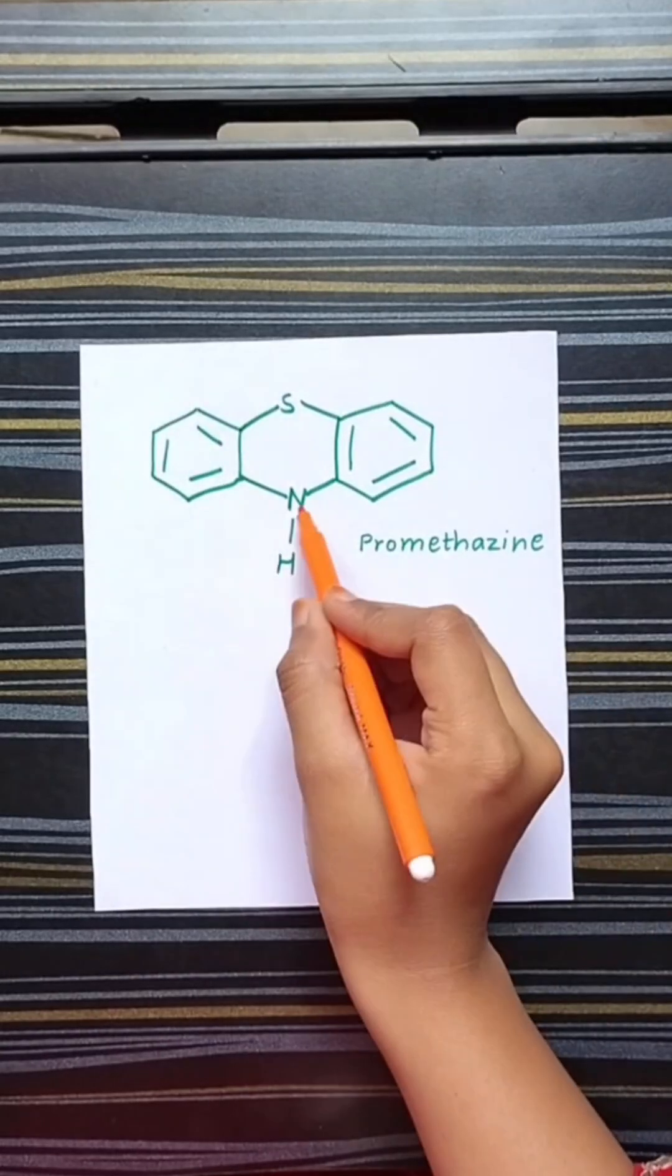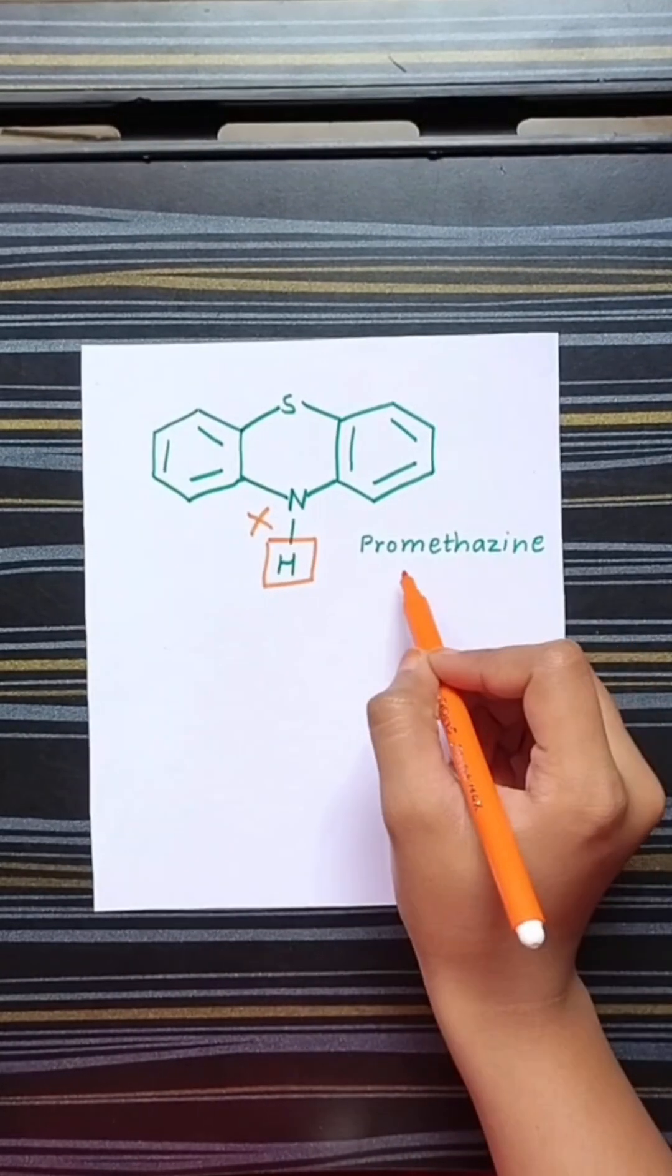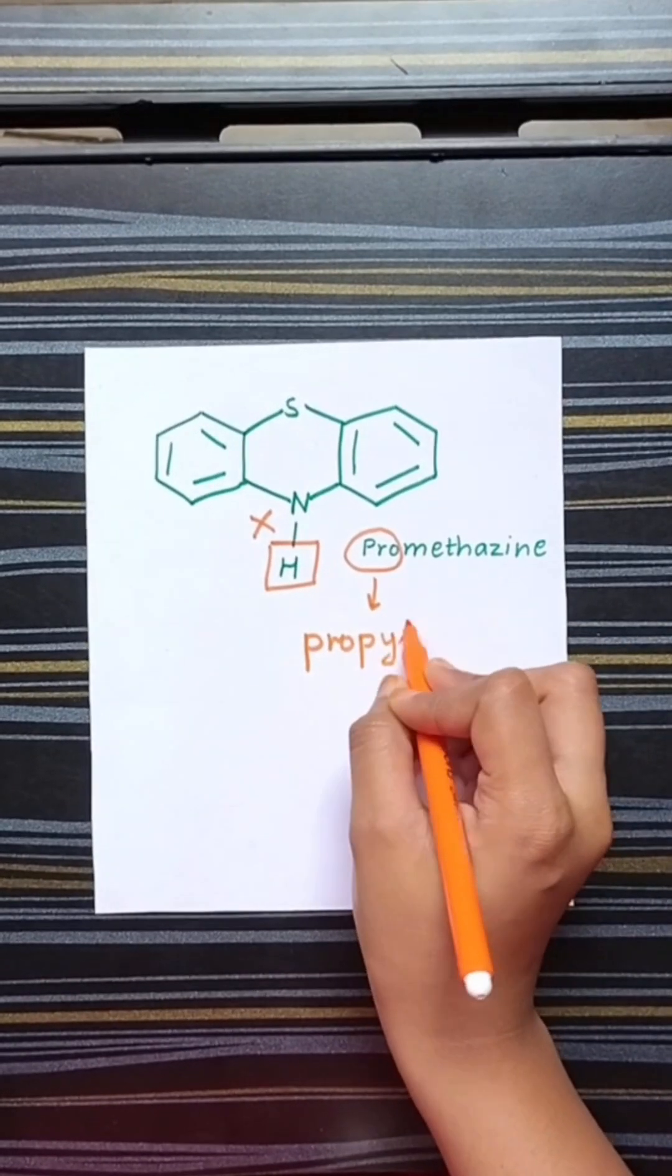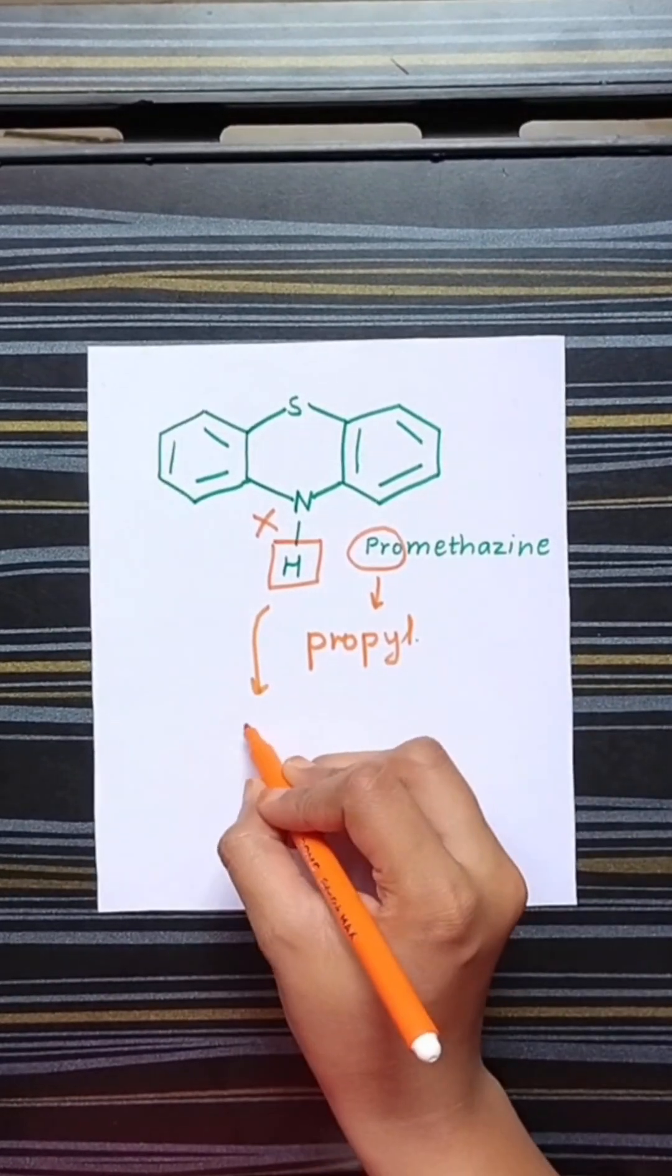Now remove the edge from the N in the phenothiazine ring and add the pro part of the promethazine. That is the propyl group.